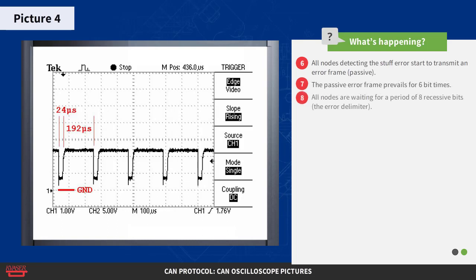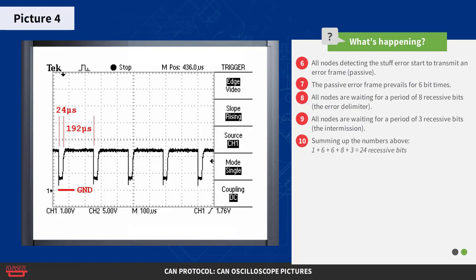The passive error frame prevails for six bit times. Then all nodes are waiting for a period of eight recessive bits, called the error delimiter. Then all nodes are waiting for a period of three recessive bits, called the intermission. Summing up: 1 plus 6 plus 6 plus 8 plus 3 equals 24 recessive bits, equals 192 microseconds. See the picture.